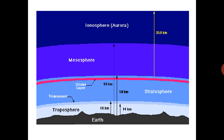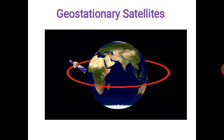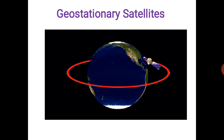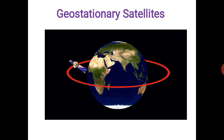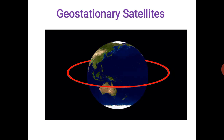Next is the different layers of the atmosphere. There are different layers, and an important one is the ozone layer, which you have all studied. Next we can see satellites — objects which are revolving around the earth. This one is the geostationary satellite, which is especially used in communication.